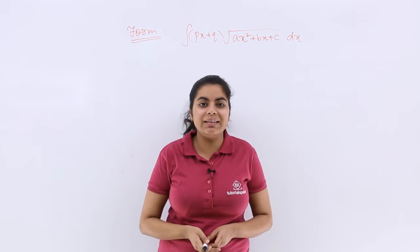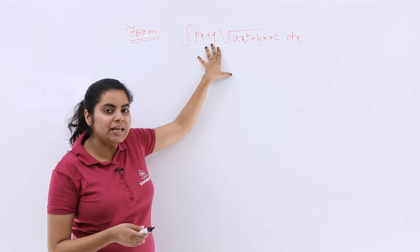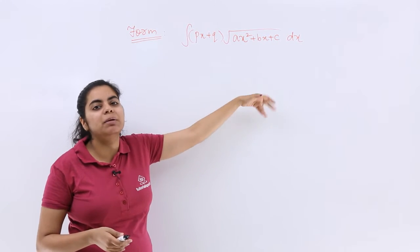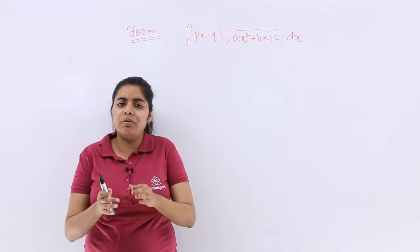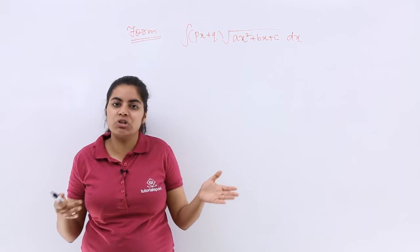Now let's see how to evaluate this new form which is integration symbol Px plus Q multiply by under root quadratic, that means linear multiply under root quadratic dx. So for this kind of question, very easy. If you know the format, you can do any kind of question on this.